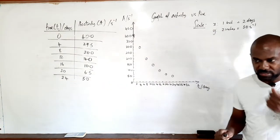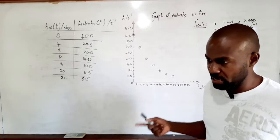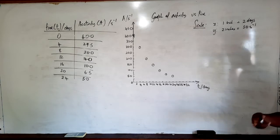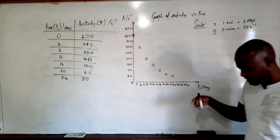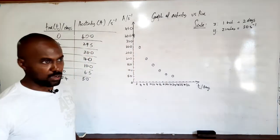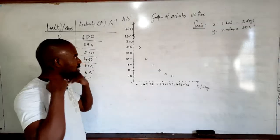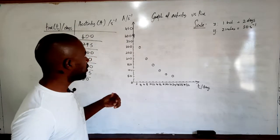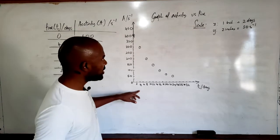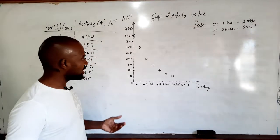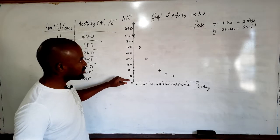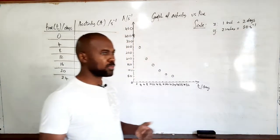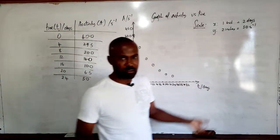Part A says: plot a graph on page 3 of activity A versus time T. We're given the graph paper and would be expected to choose our scales. I've drawn my axes on the board. I'm using a scale of 1 inch to represent 2 days on the x-axis, and 2 inches to represent 5 disintegrations per second on the y-axis. If using graph paper, you could use the same scale but in centimeters instead of inches.